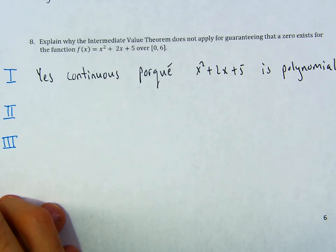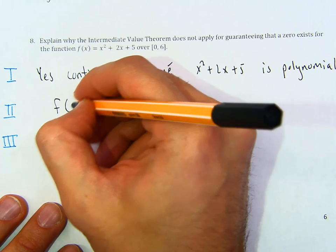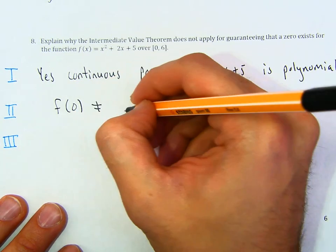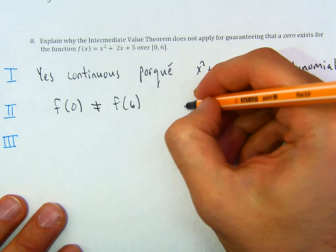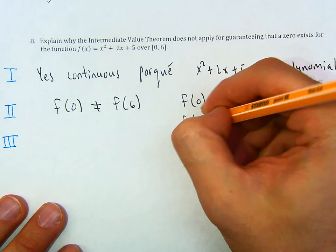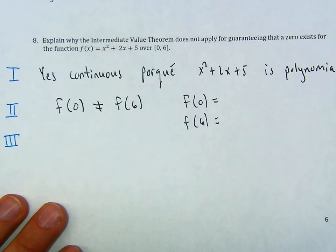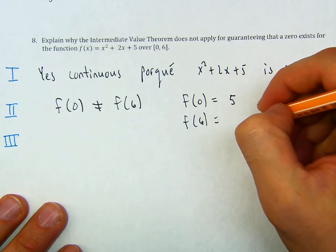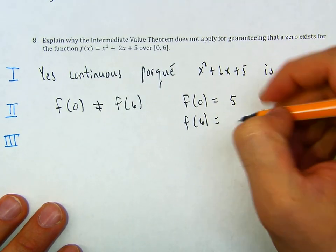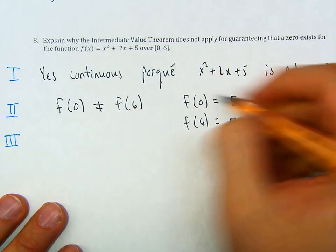Part 2: is f of 0 not equal to f of 6? Let's find both values. f of 0 is 5, and f of 6 is 53. These two are not equal to each other, so these two conditions are okay.